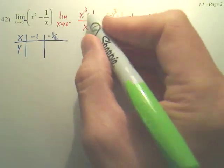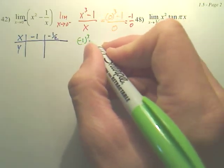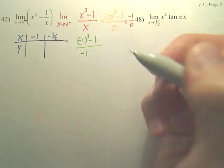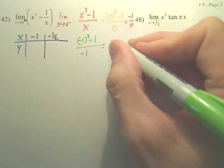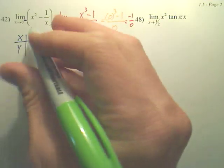You get negative 1 cubed minus 1 over negative 1, which gives us negative 2 over negative 1, which is 2.